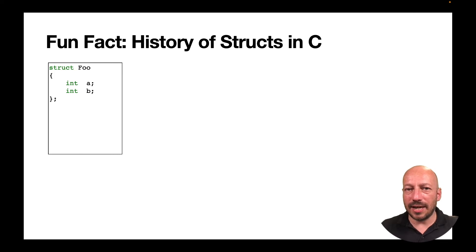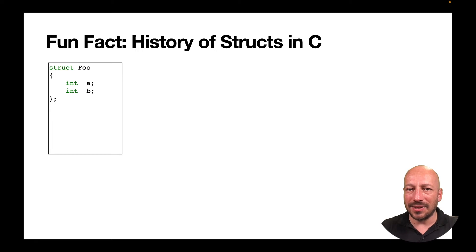Early versions of C did not have structs — they were added later because it wasn't possible to implement UNIX without them. I'll insert a clip from an interview with Ken Thompson, inventor of UNIX, where he talks about why a higher-level language was needed for UNIX, why he failed to implement it with early versions of C lacking structs, and how he asked the inventor of C to add structs so UNIX could be implemented.